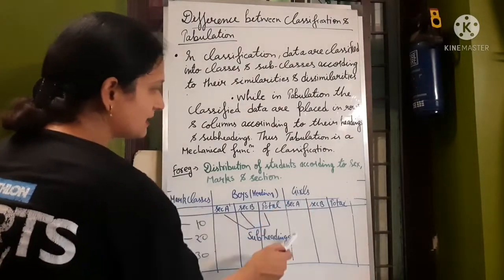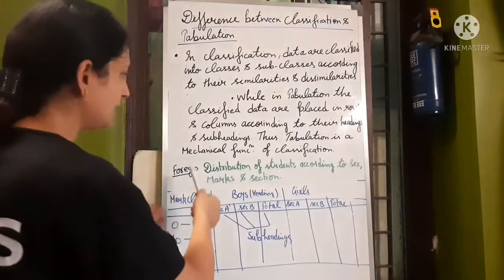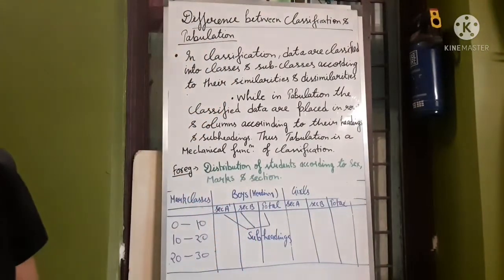This is the girls, section A, section B and total. This is what we have chosen to classify. We have classified our data. Classify the boys and girls.